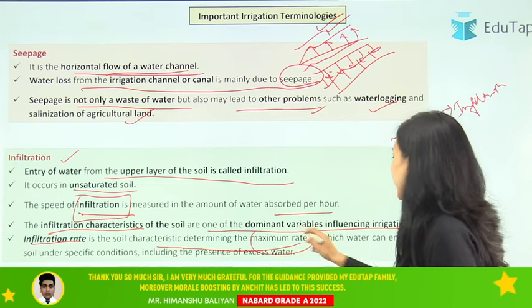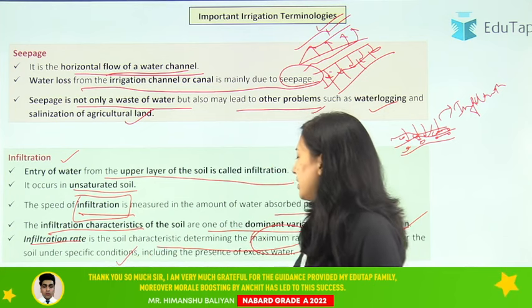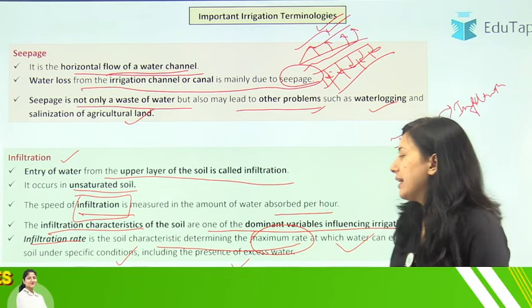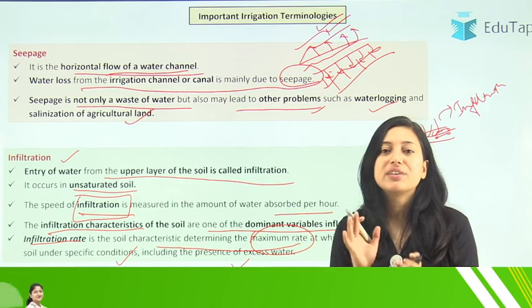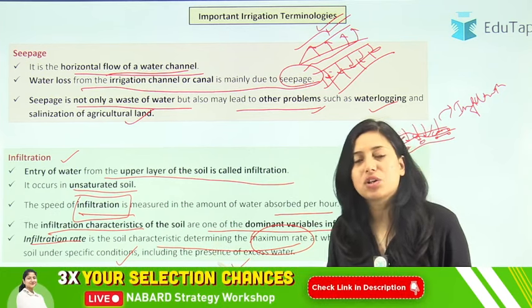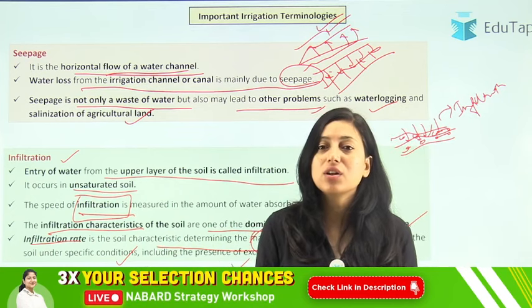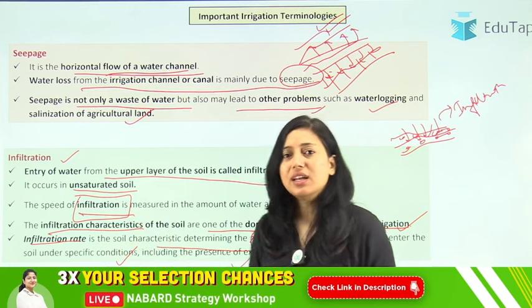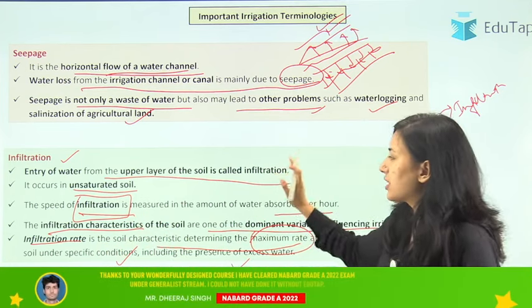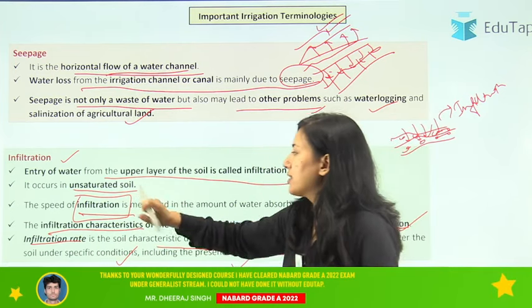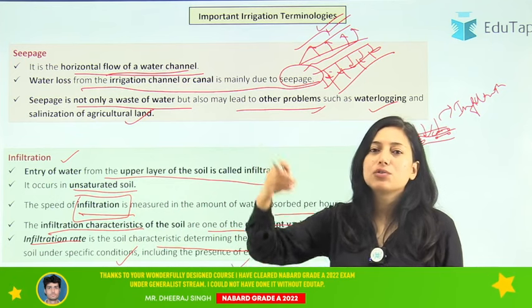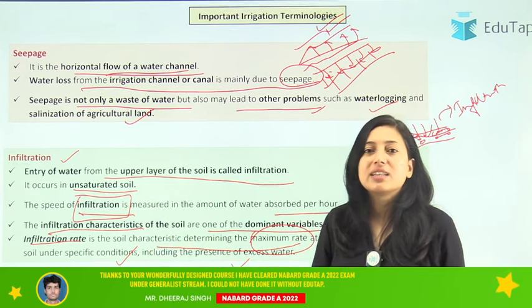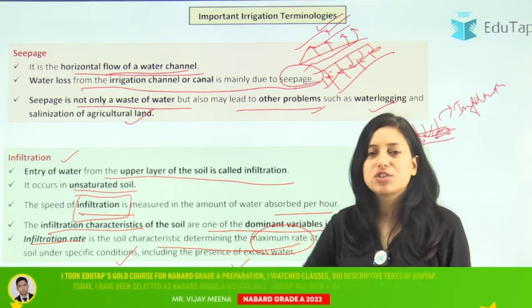Infiltration rate is a soil characteristic determining the maximum rate at which water can enter the soil under specific conditions, including the presence of excess water. It is the maximum rate at which water infiltrates into the soil even under excess water conditions. So to summarize: infiltration is the entry of water when soil is unsaturated; infiltration capacity is the amount absorbed; infiltration rate is the maximum rate at which water enters the soil.